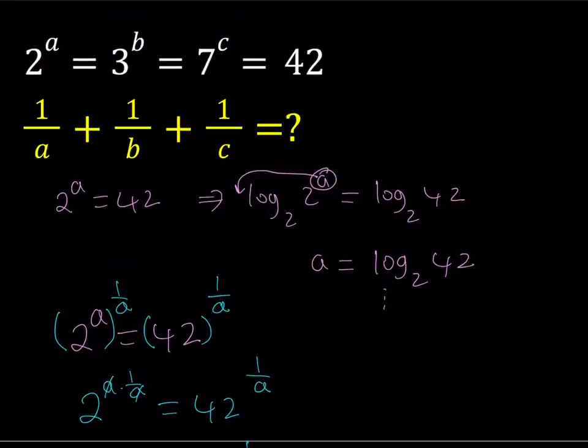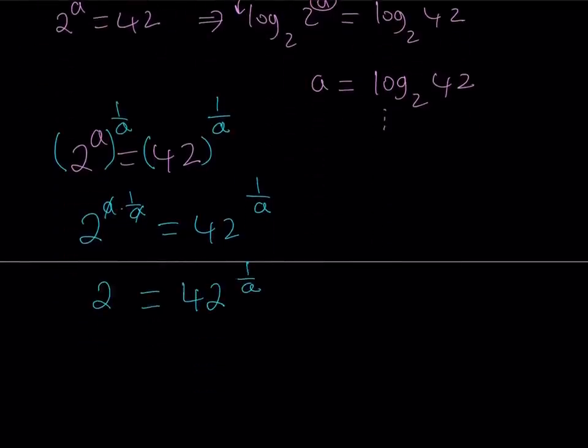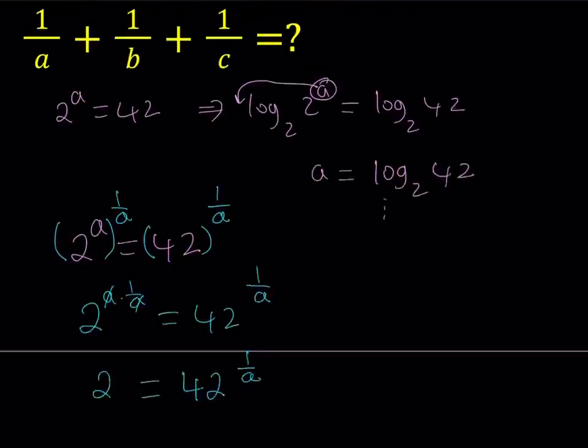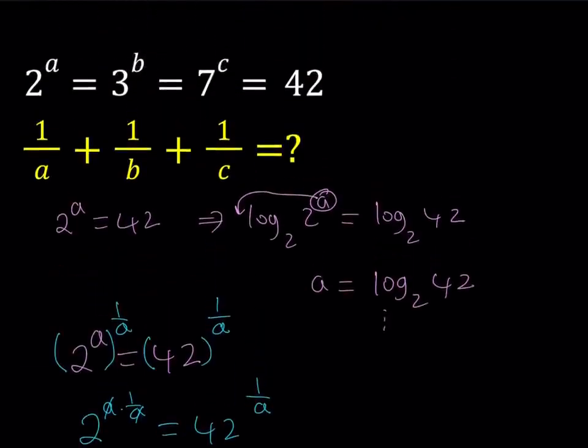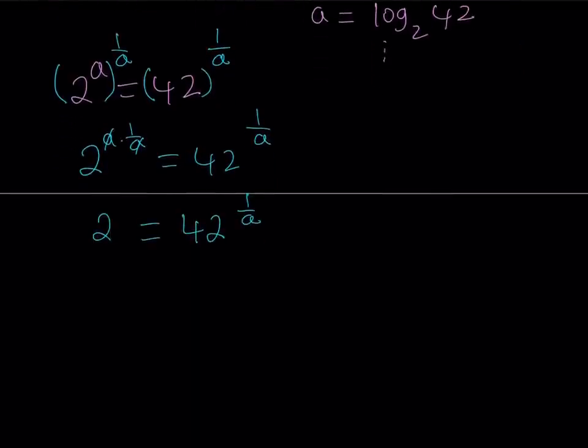So I was able to express 2 in terms of 42, but what is so good about that? My goal is to find 1 over A plus 1 over B plus 1 over C. So it makes sense if you could get 1 over A in our expression, because that's the sum we need to find at the end. Going by the same method, you can say that 3 equals 42 to the power 1 over B, and 7 equals 42 to the power 1 over C.